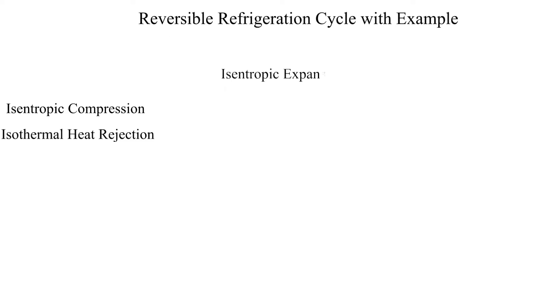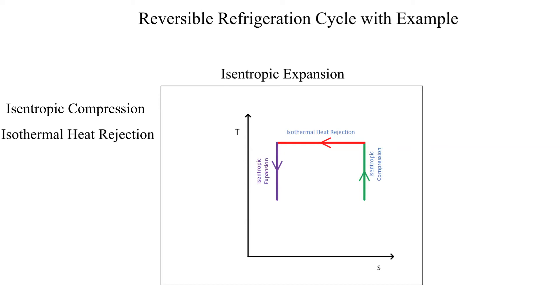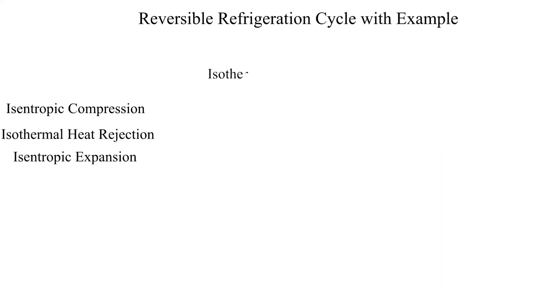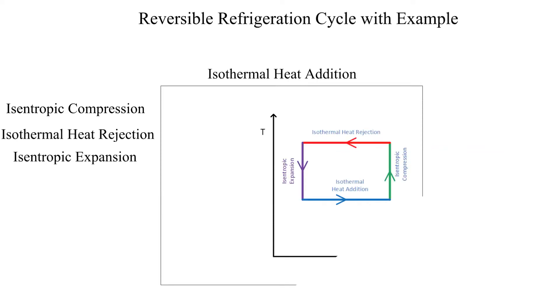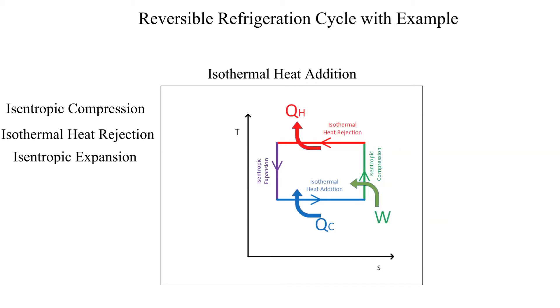The next process is isentropic expansion. This is usually accomplished with a throttle valve. The last process is isothermal heat addition. Notice that this is performed at the cold temperature. This is also the goal or desired outcome for the refrigeration cycle.